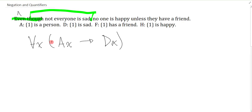The more common mistake is actually to put it here. For everything, if you're not a person, then you are sad. Well, that actually says a rock is sad, this mousepad is sad, and so on. But that's not really what we're saying at all when we say not everyone is sad. So you don't put it there.